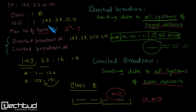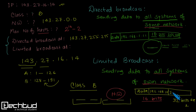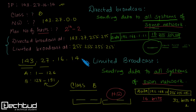For limited broadcast, we are broadcasting to the same network this IP address belongs to. In the packet, the source IP is something like 192.168.1.11, and in the destination we write all ones — all 32 bits set to 1 — which gives 255.255.255.255.